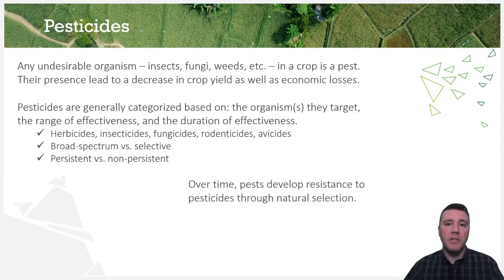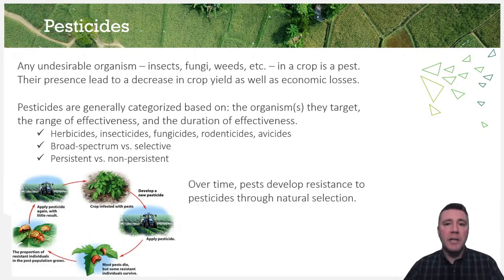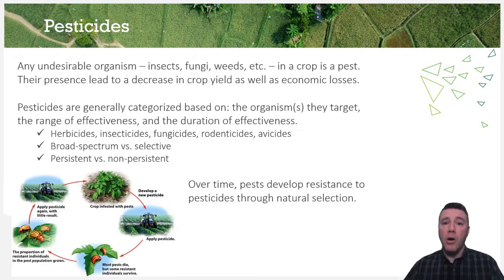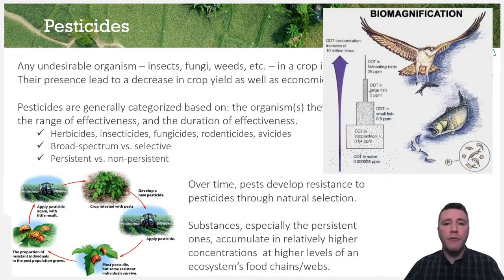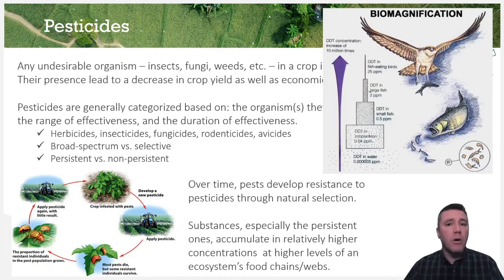Pest species may evolve resistance to pesticides over time. After application, individuals that survive reproduce and pass on their resistant traits, causing pesticide-resistant individuals to make up a larger fraction of the population, making the pesticide less effective and driving the need for newer, more powerful pesticides. Persistent substances also accumulate in higher concentrations higher up in the food chain. A classic example is DDT, which was banned in the U.S. in 1972 because it was found to build up in the tissues of predators even though it was not highly concentrated enough to affect organisms at the bottom of a food chain.